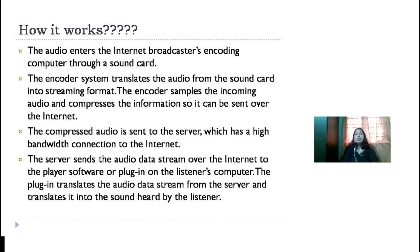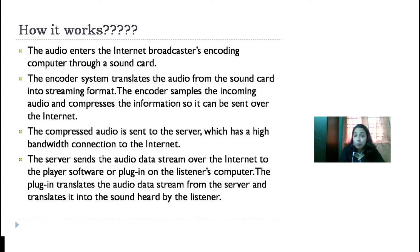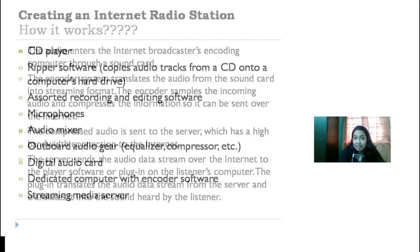The audio enters the internet broadcaster's encoding computer through a sound card. The encoder system translates the audio from the sound card into streaming format. The encoder samples the incoming audio and compresses the information so it can be sent over the internet. The compressed audio is sent to the server which has a high bandwidth connection to the internet. The server sends the audio data stream over the internet to the player software or plugin on the listener's computer. The plugin translates the audio data stream from the server into the sound heard by the listener.